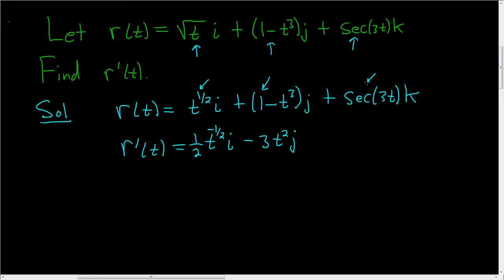The derivative of secant is secant tangent. So this is plus secant 3t tangent 3t. And we have to use the chain rule. The derivative of the inside is 3.